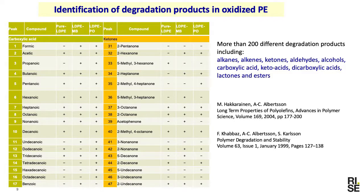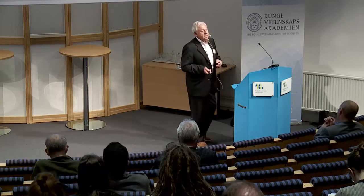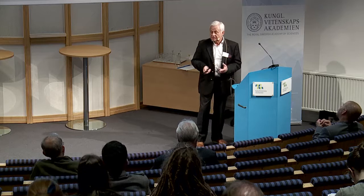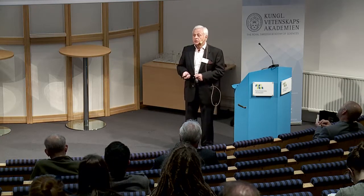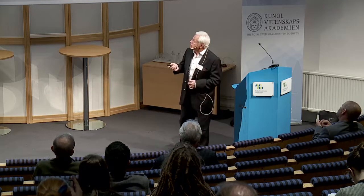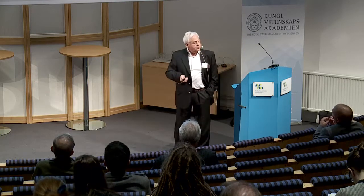We can ask ourselves what will be the degradation products. Here in Stockholm, we had a group with Professor Ann-Christine Albertsson that did a lot of work to analyze different degradation products from the oxidation of polyethylene. They found more than 200 different degradation products of these types — different carboxylic acids, ketones, and so on. These degradation products have different chemical properties than the original polyethylene — different hydrophobicity and different properties that attract microorganisms.